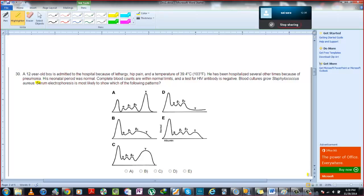Okay, so we can see that they have given us some sort of serum electrophoresis. And then it's a 12-year-old boy. He's admitted to the hospital because of lethargy, hip pain and a temperature. He has fever, and he has been hospitalized several other times. What is the differential diagnosis that's coming in your mind right now?